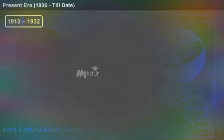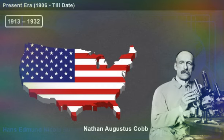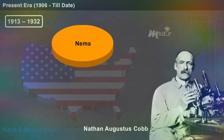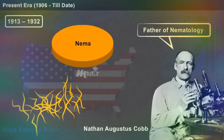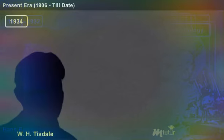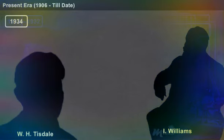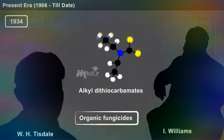During 1913 to 1932, Nathan Augustus Cobb of the USA coined the term nema and described hundreds of nematodes. He was regarded as the father of nematology. In 1934, W. H. Tisdale and I. Williams studied organic fungicides by discovering alkyl dithiocarbamates.